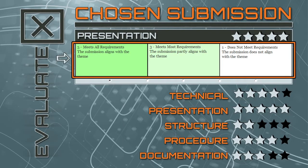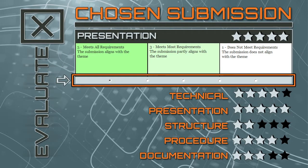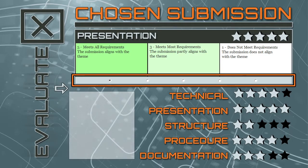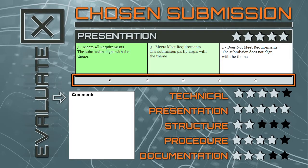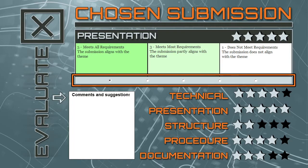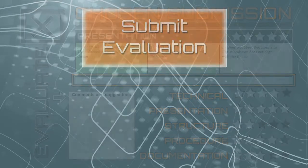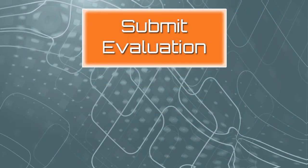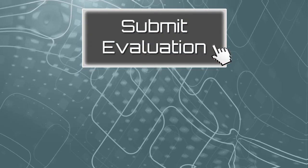Read the criteria, review the entry, and then assess how well it met the criteria. Then give constructive comments on why you gave the score you did, and provide suggestions on how it could be improved. After you're finished evaluating the submission, click the Submit Evaluation button.